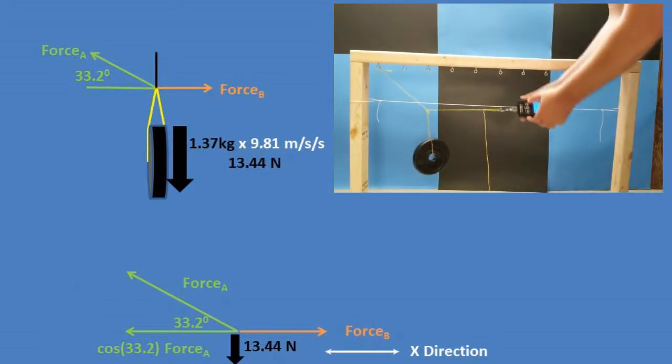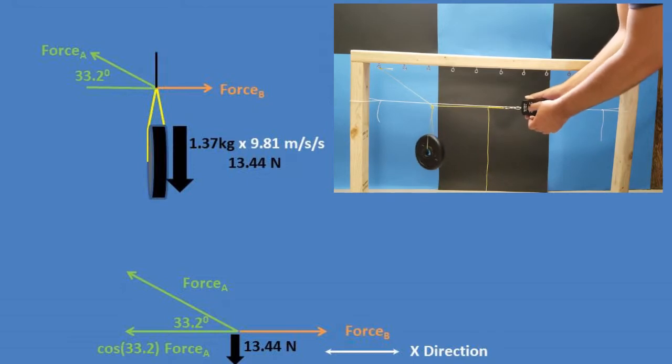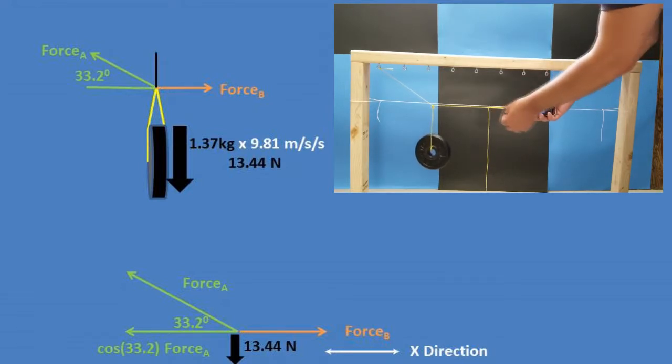We will use trigonometry, more specifically SOHCAHTOA, to break the tension force going at a 33.2 degree angle into vectors going into the x or right-to-left directions. So, cosine of 33.2 degrees times the tension force equals the force in the x direction.